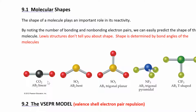We want to figure out how these shapes are determined and look at the bond angles. Just because you have a central atom and two atoms on the side doesn't mean you'll get a linear arrangement. CO2 is linear, but SO2 — which also has a central atom and two other atoms — is bent. SO3 has a central atom with three other atoms and is trigonal planar, but NH3 is a trigonal pyramid.